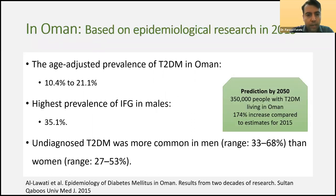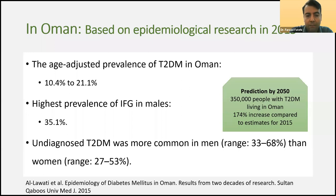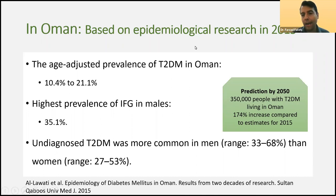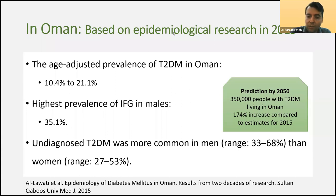Regarding Oman, based on the best published article from 2015, the age-adjusted prevalence of type 2 diabetes in Oman was around 10% to 20%, and the highest prevalence of impaired fasting glucose was in males at around 35%. It's estimated that the number of undiagnosed type 2 diabetes is much more, possibly higher than 25%. According to predictions in that manuscript, in 2050 we would have around 350,000 people with type 2 diabetes, increasing more than 1.7 times compared to today.